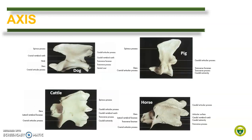The second cervical vertebra is the axis, or epistrophius. Like the atlas, variation exists among species. Primarily, we can use the dens, or the odontoid process, as a point structure to identify the species. In dogs, the dens is tooth-like, as shown here.